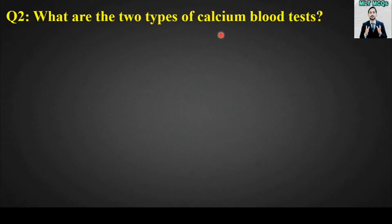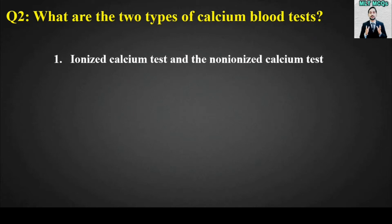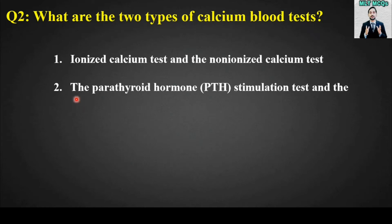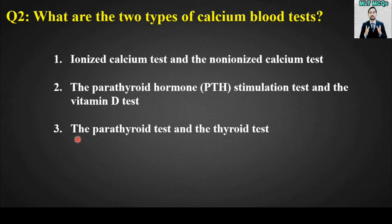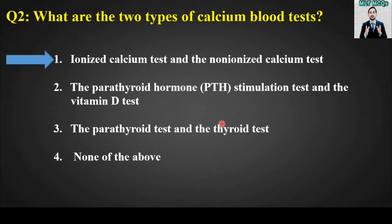MCQ number two: What are the two types of calcium blood tests? Options are: ionized calcium test and non-ionized calcium test; the parathyroid hormone PTH stimulation test and the vitamin D test; the parathyroid test and the thyroid test; or none of the above.